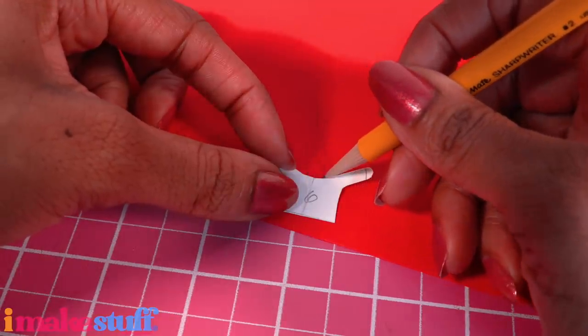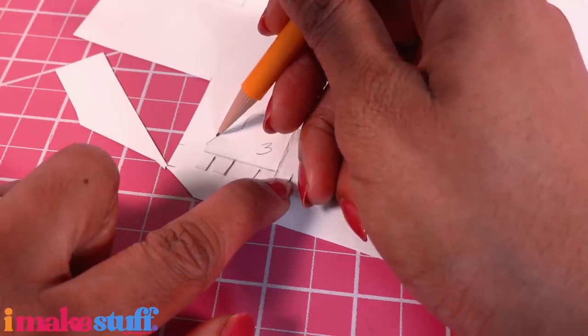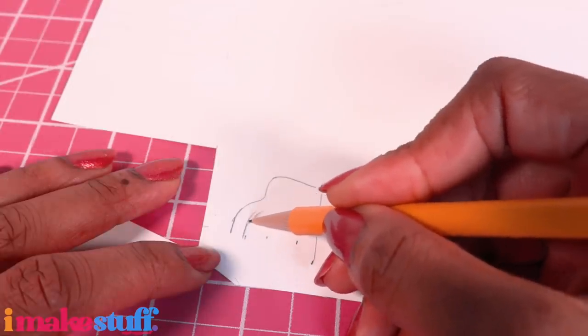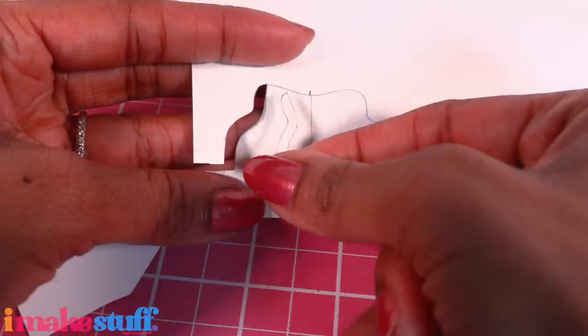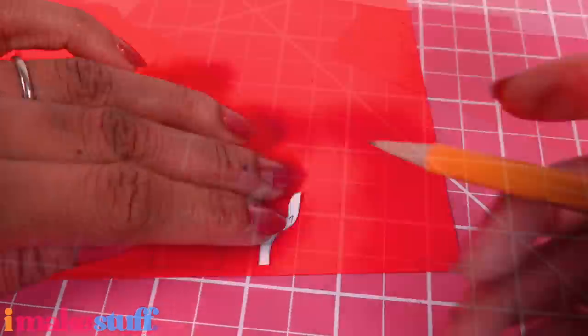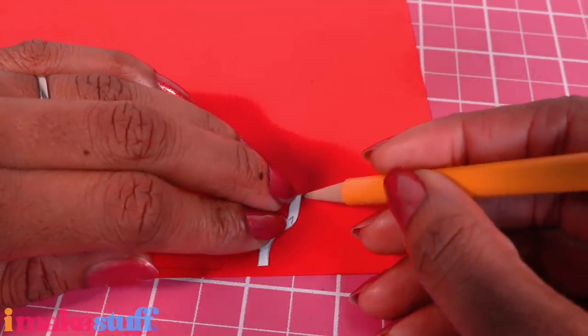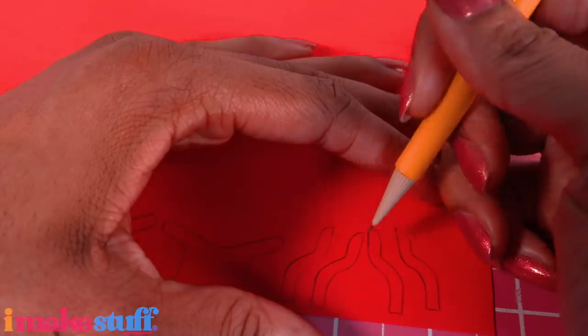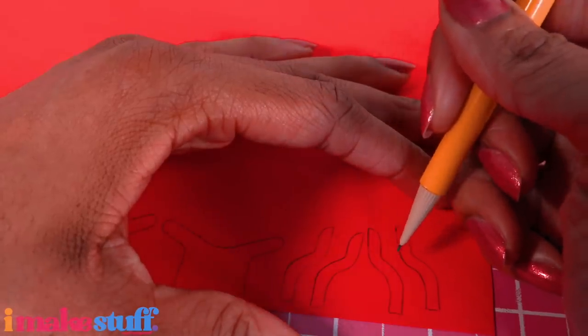Use pattern three again to make a border at one edge. Cut it out, label it seven, and trace two for each shoe on red. And I just flipped it over to get the other side.